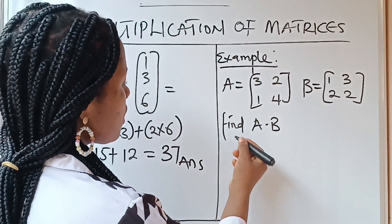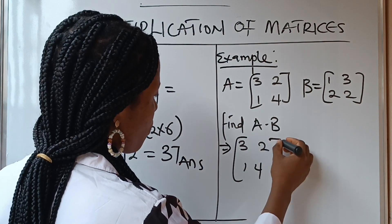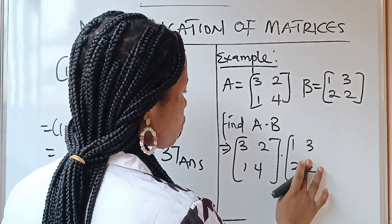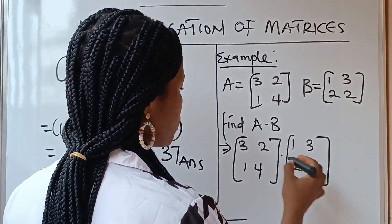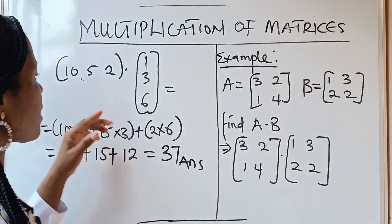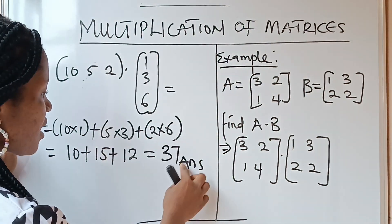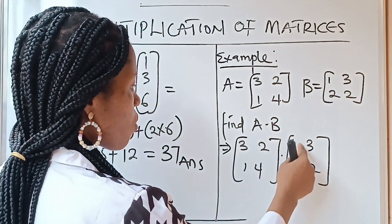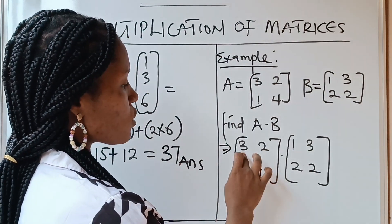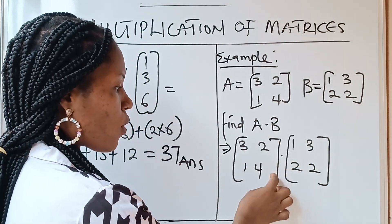So this is equal to A = [3, 2; 1, 4] dots B = [1, 3; 2, 2]. What we need to do is open our brackets and do exactly the same thing we did before. We are going to use one row to multiply one column to get a single number. But this time we have one row, one column, another row, another column. So we are going to be forming one number, one number, one number, one number. Just keep calm and see how I'm going to do it.